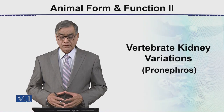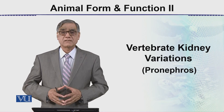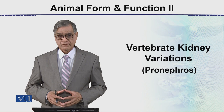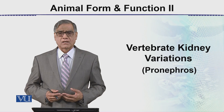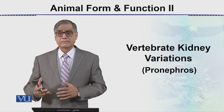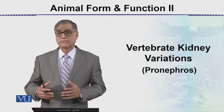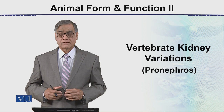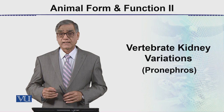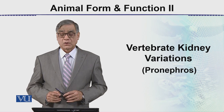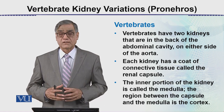In this module, we will be discussing the vertebrate kidney variations — that means vertebrates in which kidneys are found. There are three types of kidneys. These are the kidneys which we call the pro-nephros, the meso-nephros, and the metanephros. This module we will be discussing the pro-nephros in vertebrates.